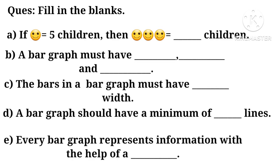Question number 1. Fill in the blanks. If smile equals 5 children, then 3 smilies equals dash children. We will simply multiply it. 5 multiplied by 3 which equals 15.